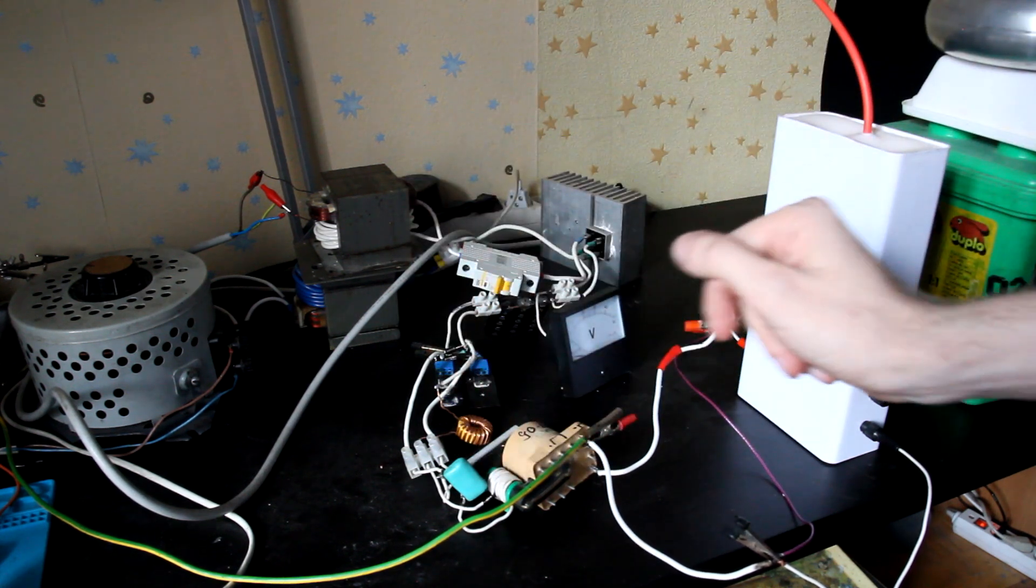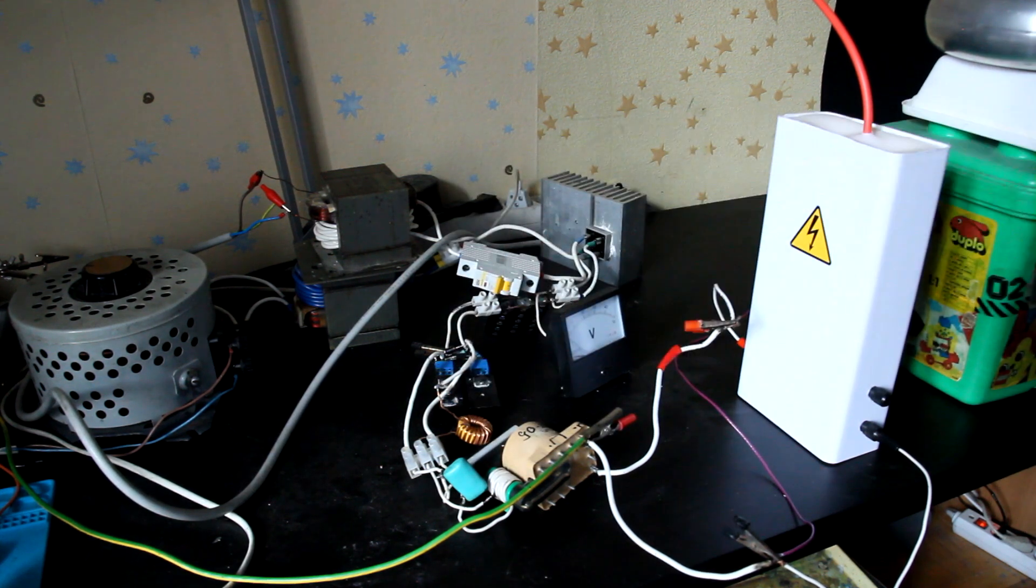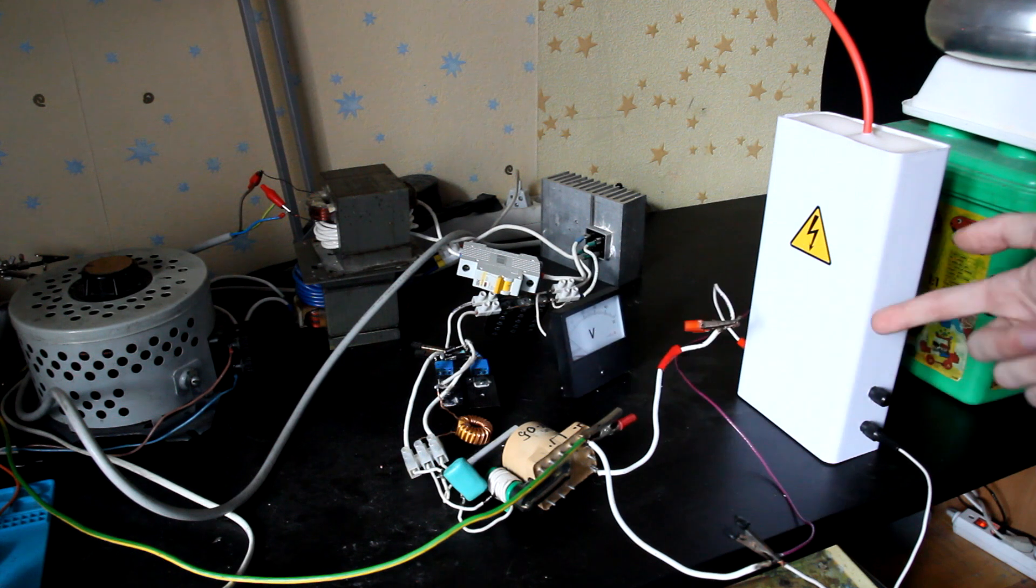The high frequency AC goes to the primary of this flyback transformer. The secondary of the flyback transformer has approximately 1200 turns, so it gives out high voltage AC at high frequency.